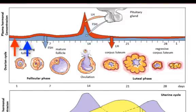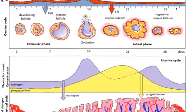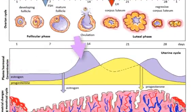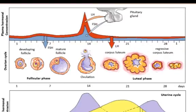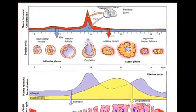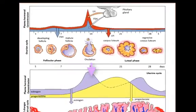FSH and LH stimulate follicle growth and estrogen secretion by the ovaries. Estrogen levels rise and feed back to the anterior pituitary, inhibiting release while LH and FSH continue to be produced — they're just not released, so they build up. As estrogen levels peak around day 12 or 14 of the cycle, all of that built-up LH and FSH surge into the body.